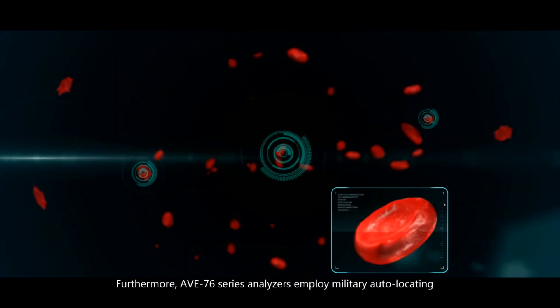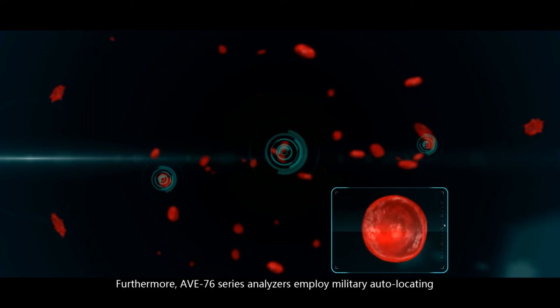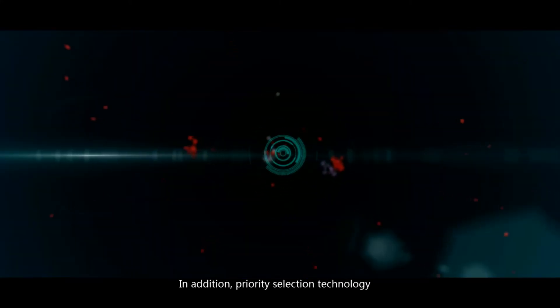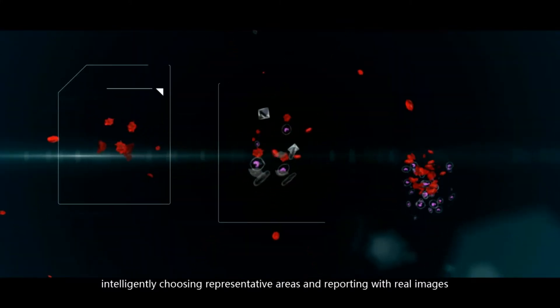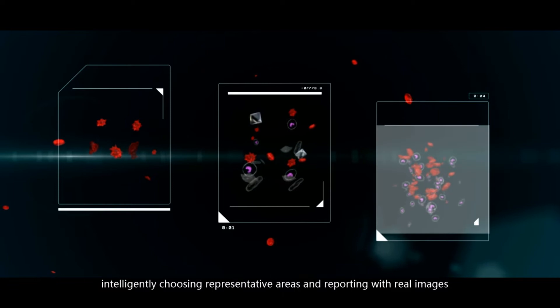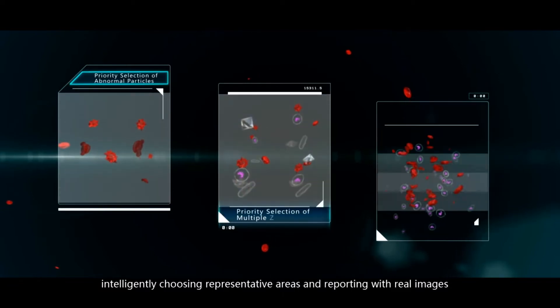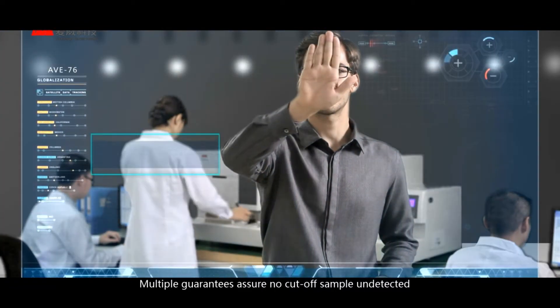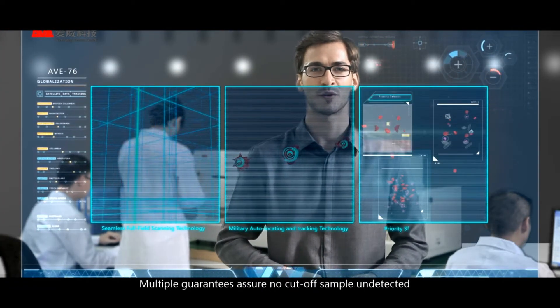Furthermore, AVI-76 series analyzers employ military auto-locating and tracking technology to prevent particles from being undetected. In addition, priority selection technology intelligently chooses representative areas, and reporting with real images prevents particle types from being undetected. Multiple guarantees ensure no cut-off sample undetected.